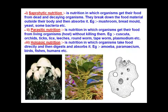In amoeba, as studied in class 9th, the process was endocytosis. So, students, we have now studied about nutrition and its different types. This whole chapter, Life Processes, is an easy chapter and many concepts should already be clear from your earlier classes. Tomorrow we will continue with nutrition in human beings. Thank you very much.